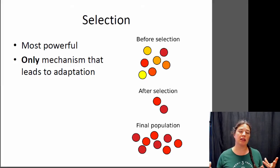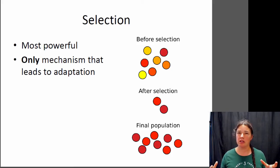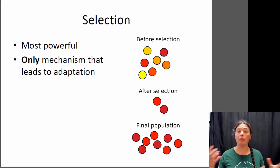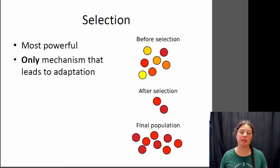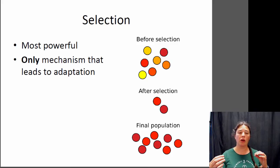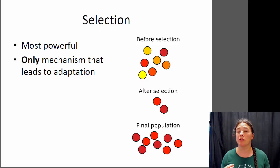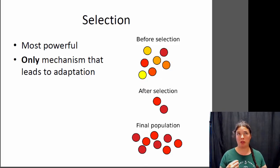So in order for selection to happen, there are a couple of different traits of the population that you need to have. The population needs to have some sort of variation. That variation has to be heritable, so it has to have some sort of genetic component. And then there has to be some sort of difference in the reproductive success of some individuals with particular traits over others.